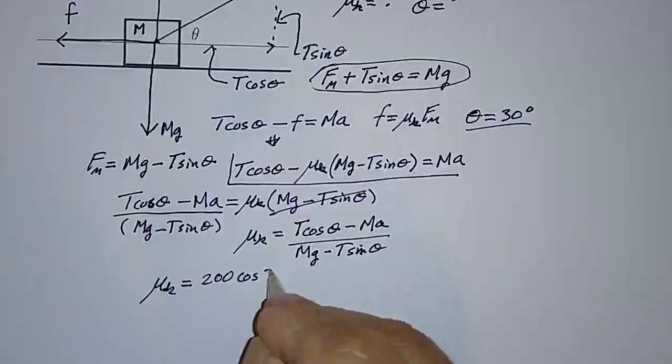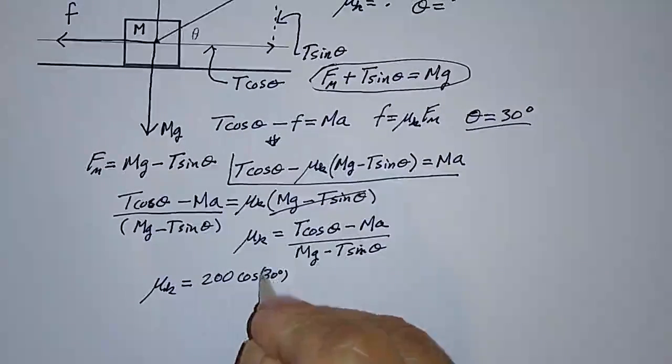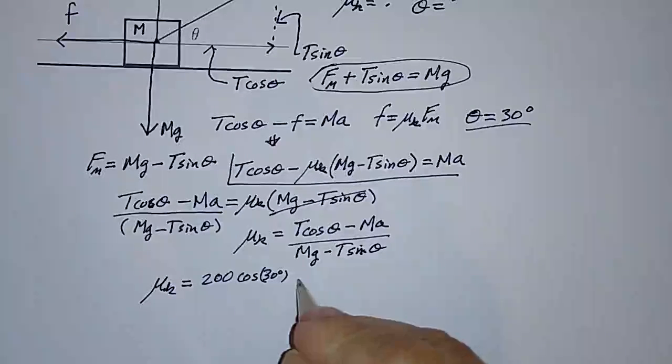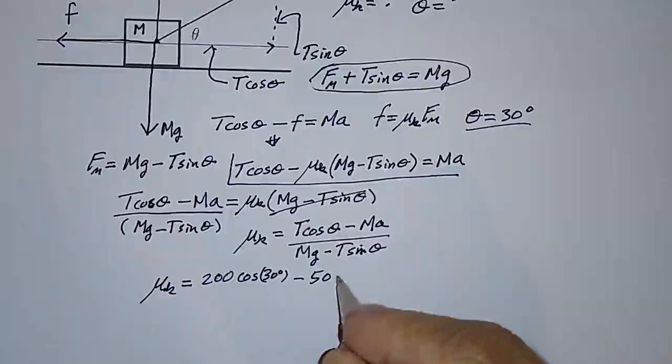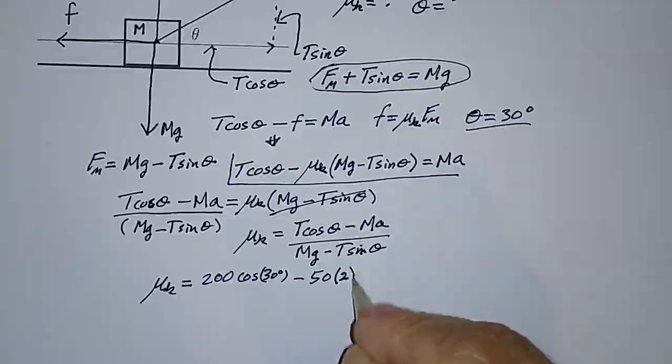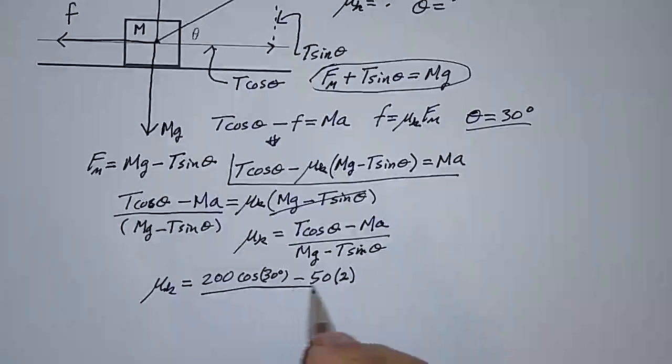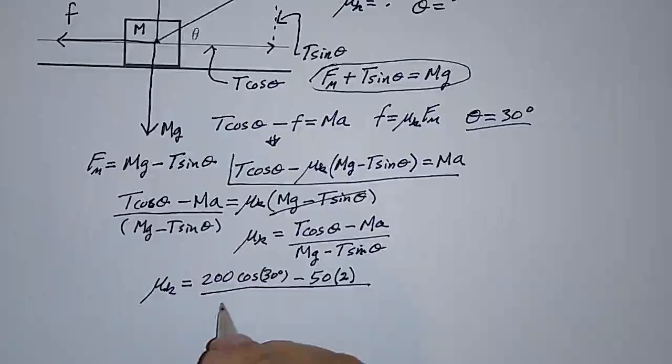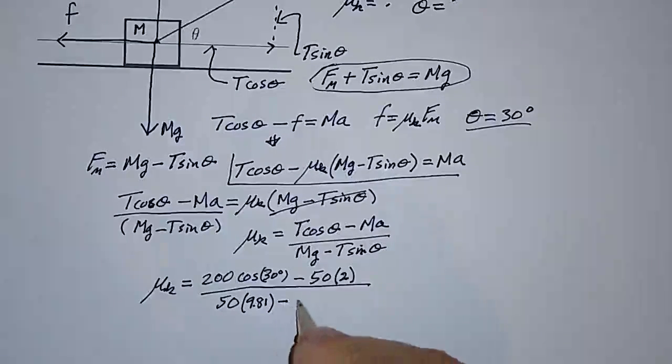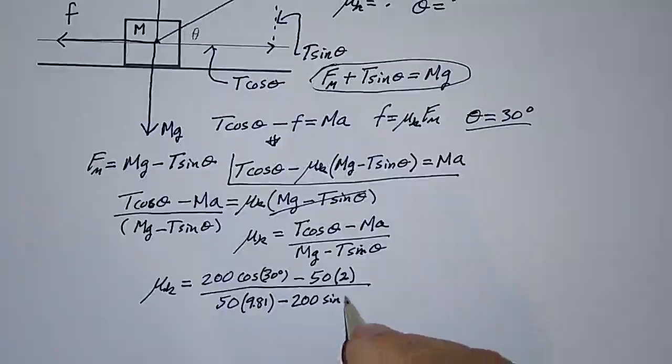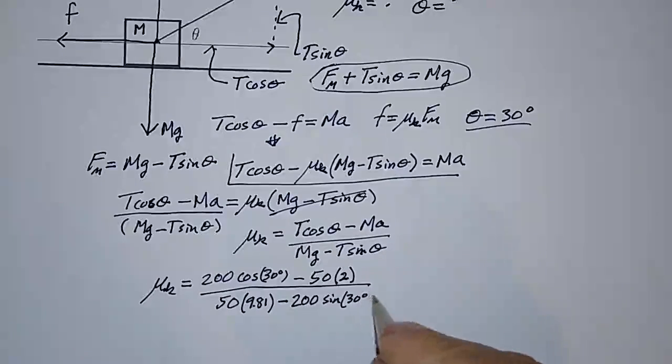So this will be cosine 30 degrees minus the mass, which is 50 kilograms times the acceleration, which is 2 meters per second squared. And all this is divided by the mass, which is 50 times G, which is 9.81 minus T, which is 200 times the sine of 30 degrees.